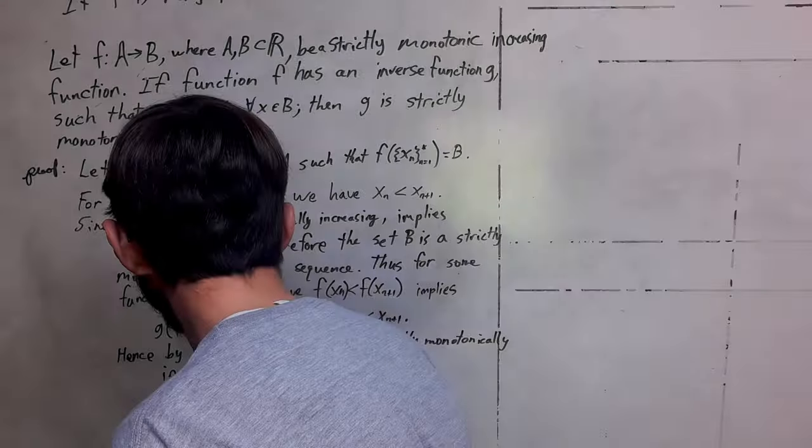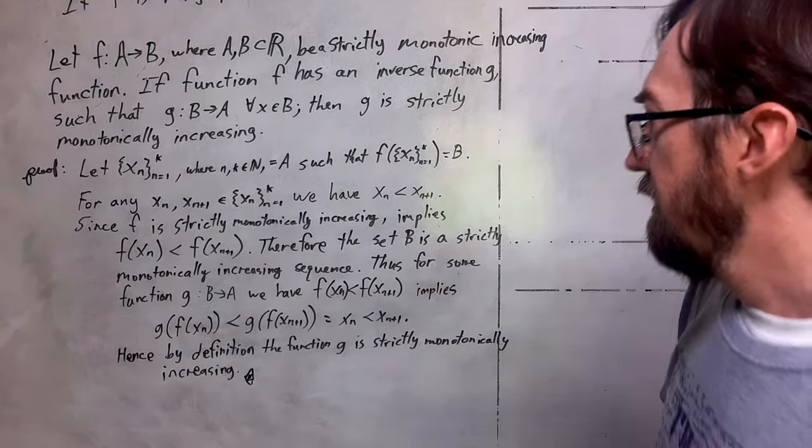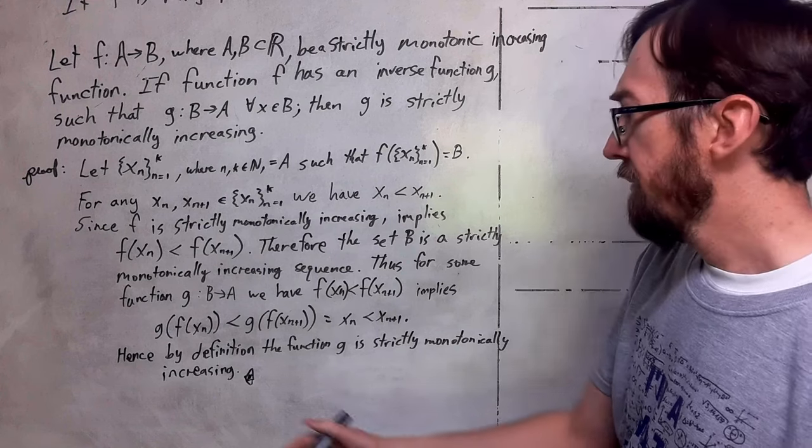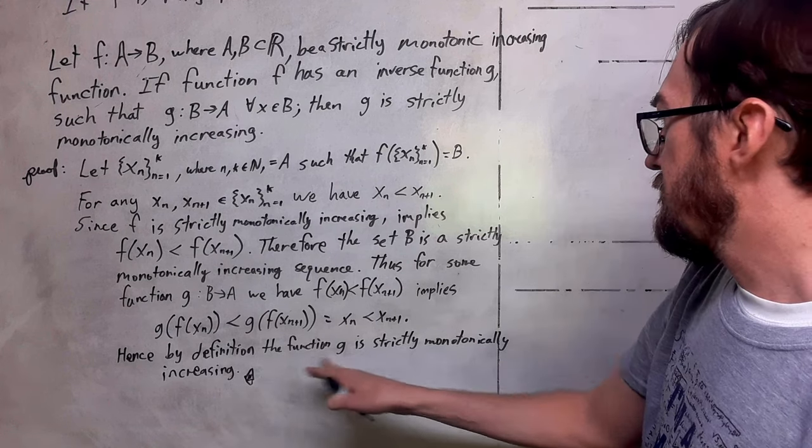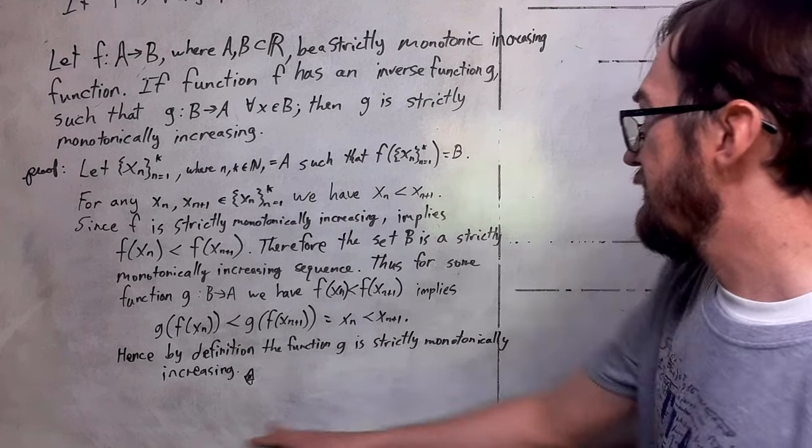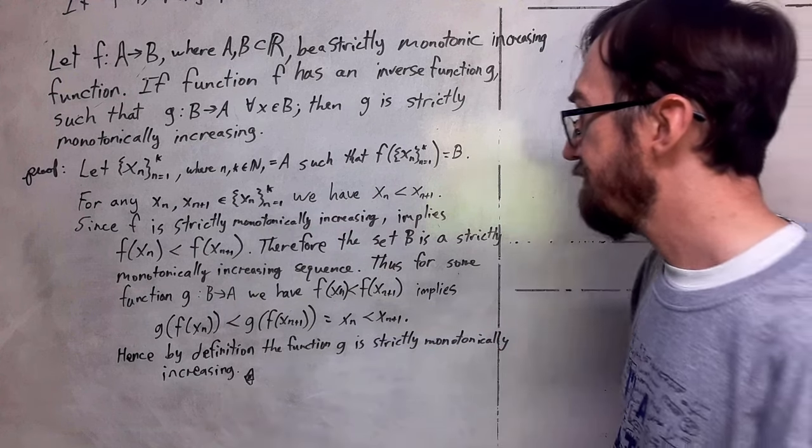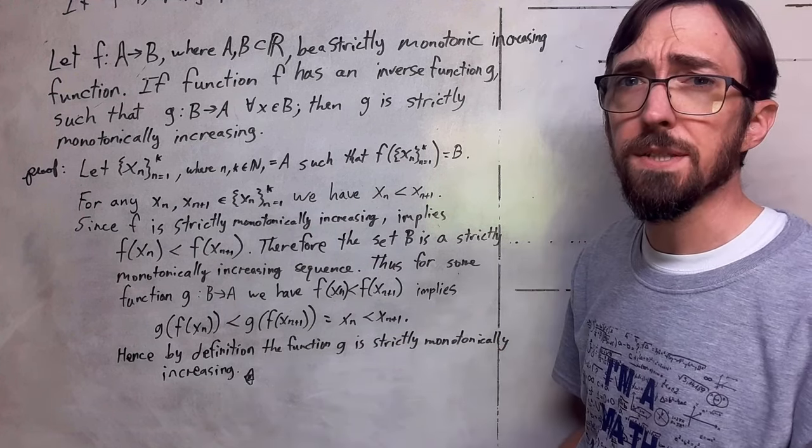So, by definition, the function g has to be strictly monotonically increasing also. And that ends our proof.